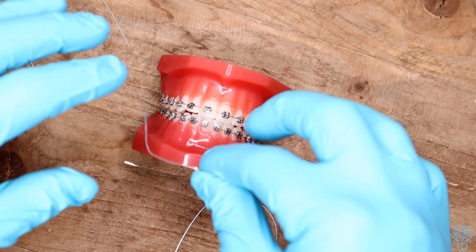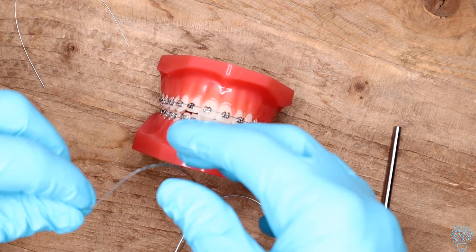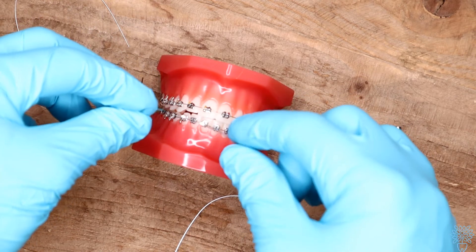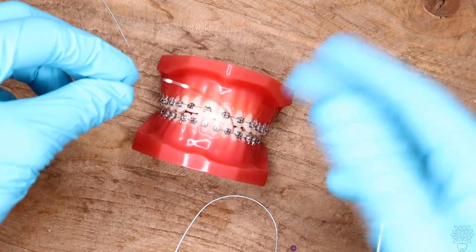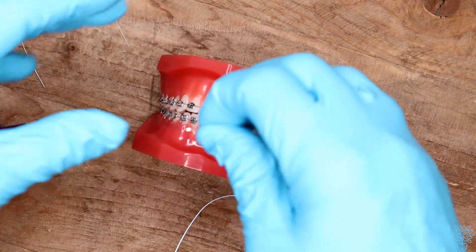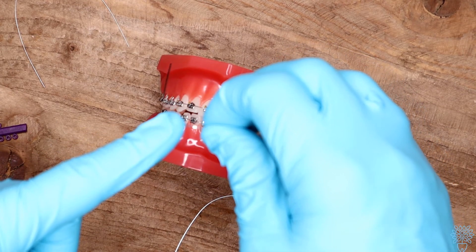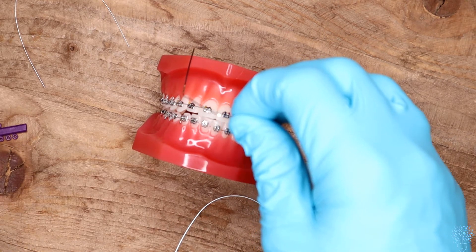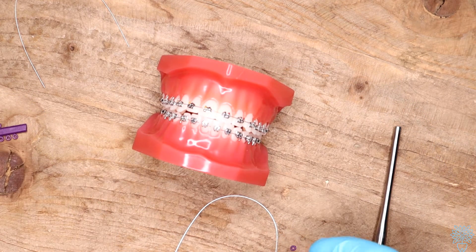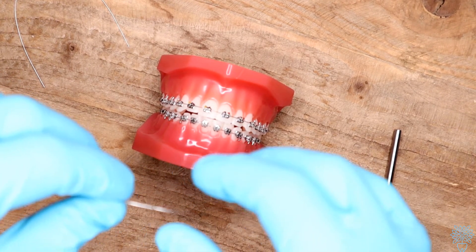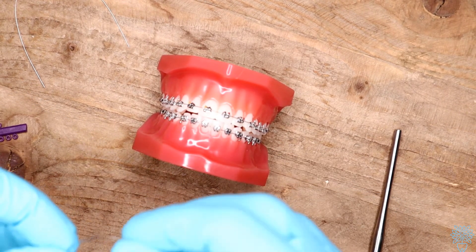So that's why a lot of times you'll see orthodontists, when you're getting towards the end of treatment, we'll do a lot of bends in the wire. Because say we want one tooth to be up or down or tilted or something. We can just do a quick bend, boom, quick bend in the wire. And whatever the wire does, the tooth is going to do as well. So that's how we finish off a lot of cases. And that's how you know if you have a good orthodontist, because if they make nice, easy, good bends, you're going to get a really nice, good finish.